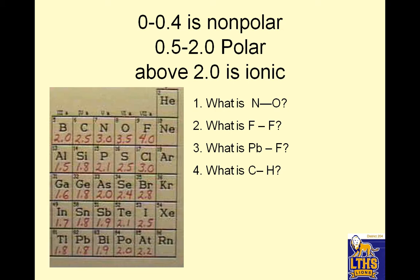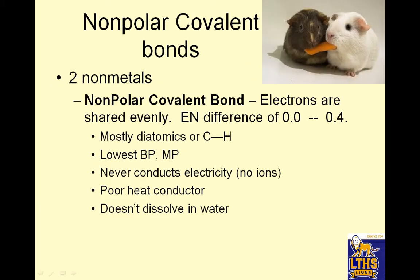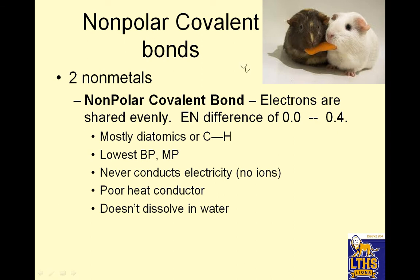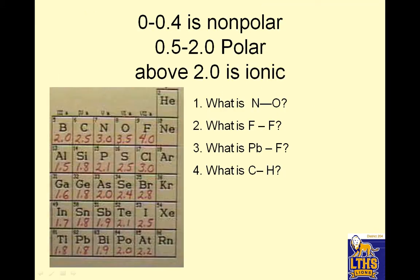0 to 0.4 is nonpolar. So what I did was I looked right here and I had 3 to 3.5 — that's 0.5, which meant it is polar because it's in that region. F to F would be 4 minus 4, which would be 0, which would be nonpolar.